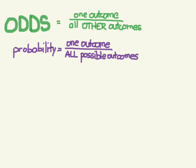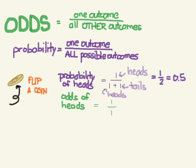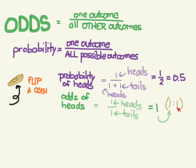An example will make this easier to understand. Take flipping a coin, and our outcome is getting heads. The probability of getting heads is the number of ways we can get heads — just one — over all possible outcomes, heads or tails. So one over two, which is one-half. The odds of getting heads is one way over all other possible outcomes, which is just tails — one other way. So the odds is one over one, which is one, expressed as one to one. These are called even odds.